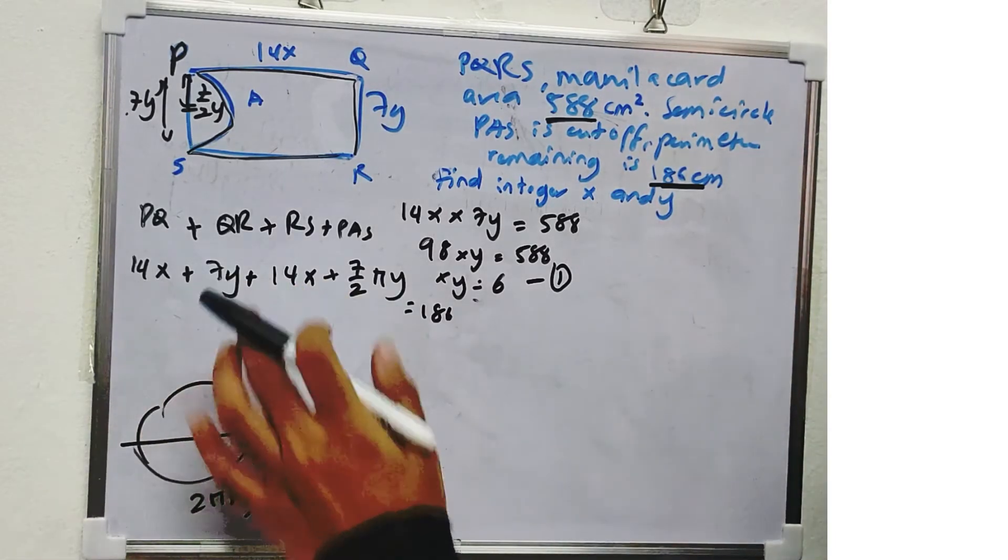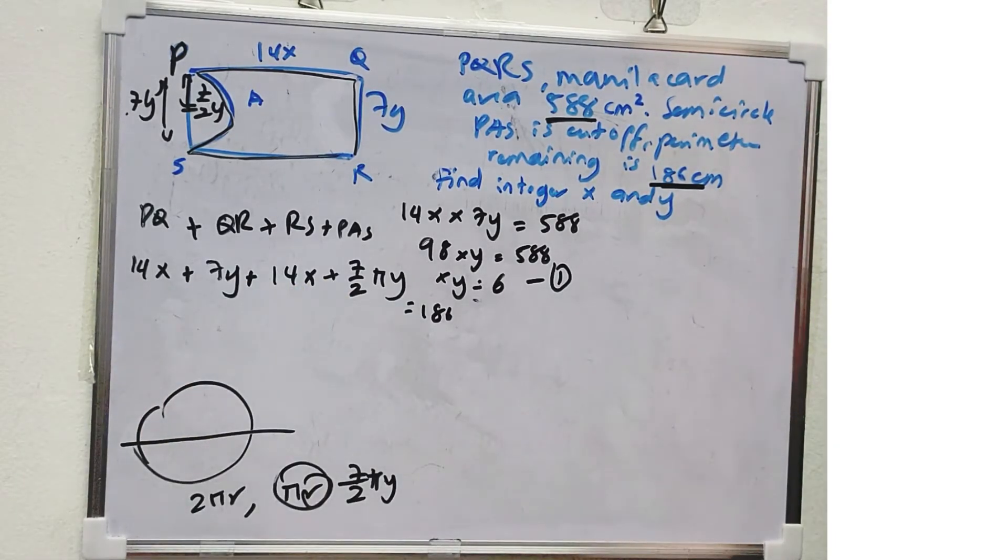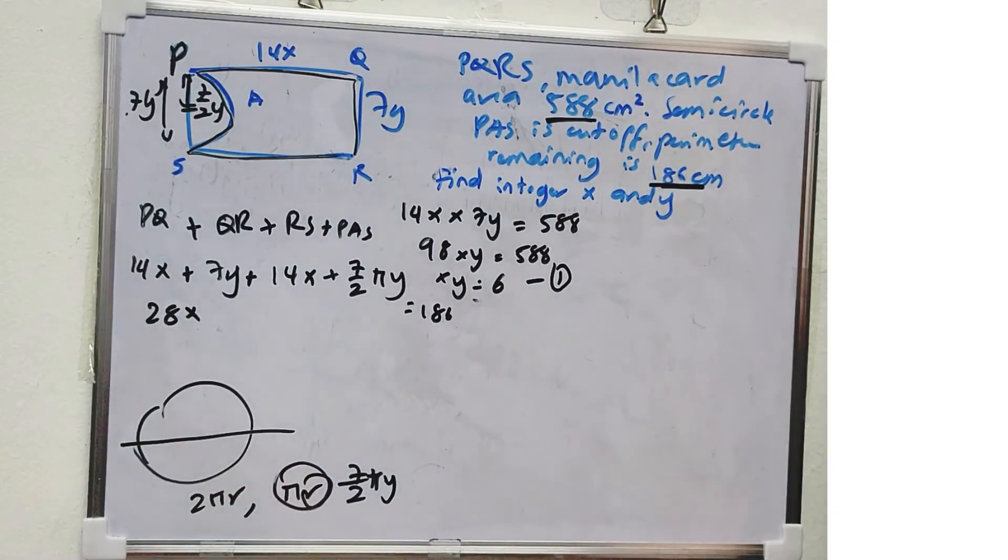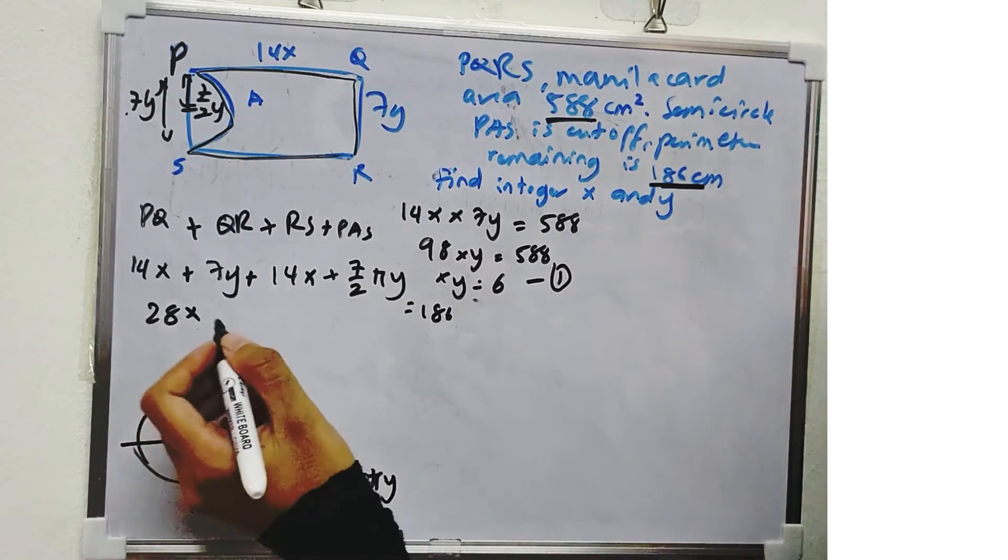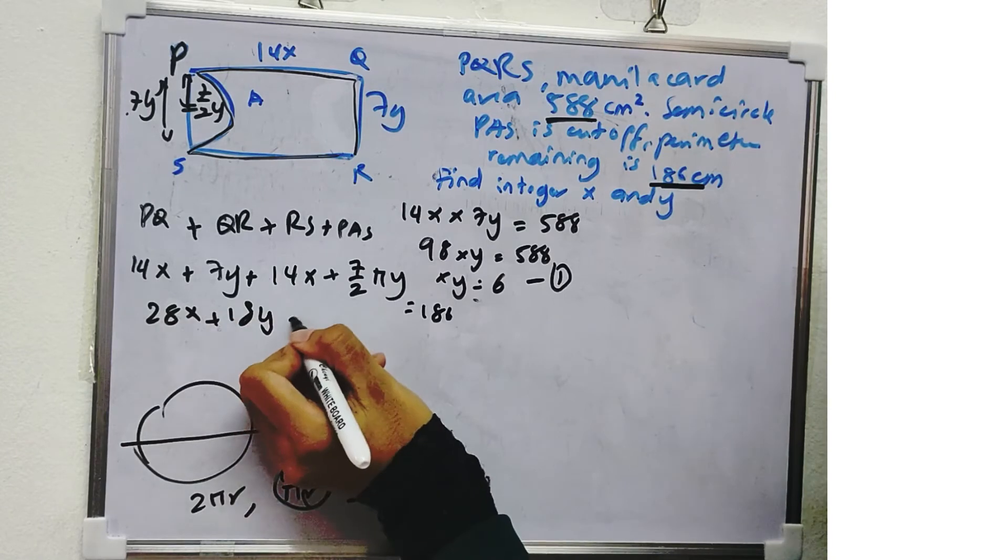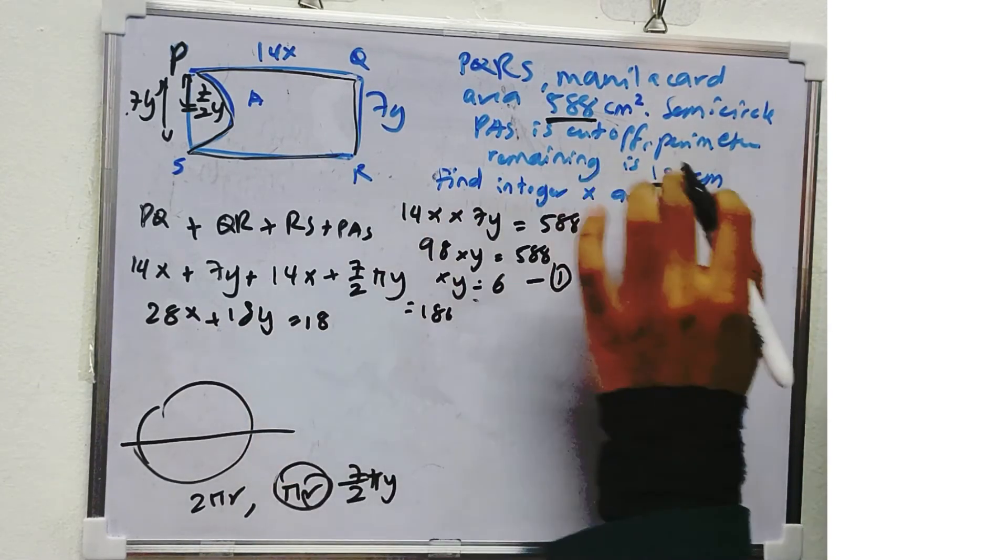So we combine X and X. 14 plus 14 is 28X. 7 plus 7 over 2 π is 7 plus 7 over 2 times π is 17.9955, or 18Y, which is equal to 186.